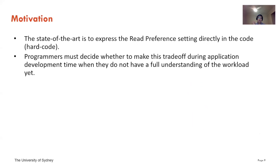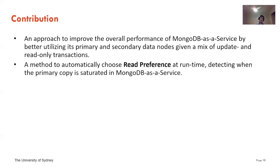However, the state of the art is to express the read preference setting directly in the code. Programmers must decide whether to make this trade-off during application development time, and at that time they do not have a full understanding of the workload, hardware, and all sorts of settings. So, in this piece of work, we present an approach to improve the overall performance of MongoDB service by automatically choosing read preference at runtime by detecting when the primary copy is saturated.